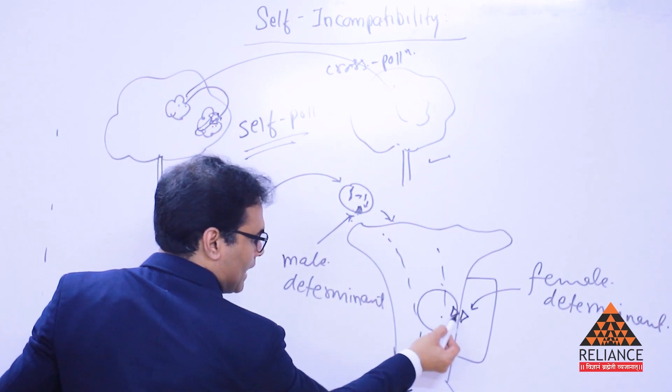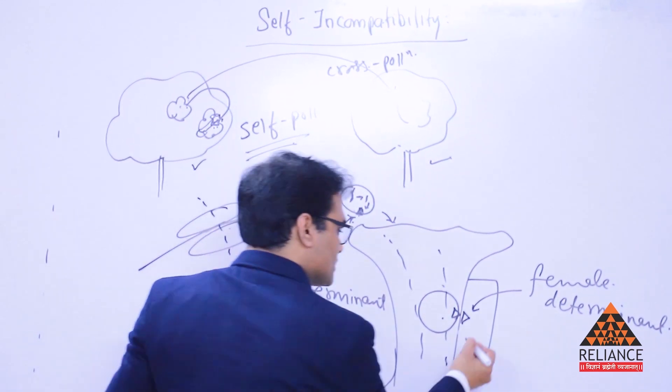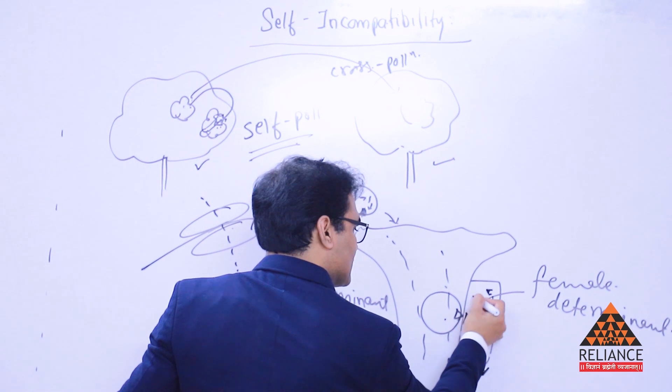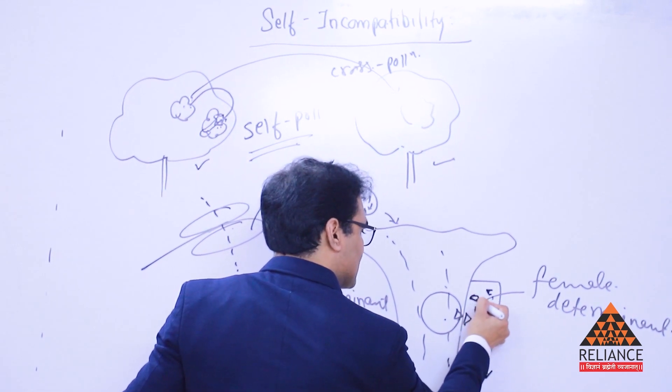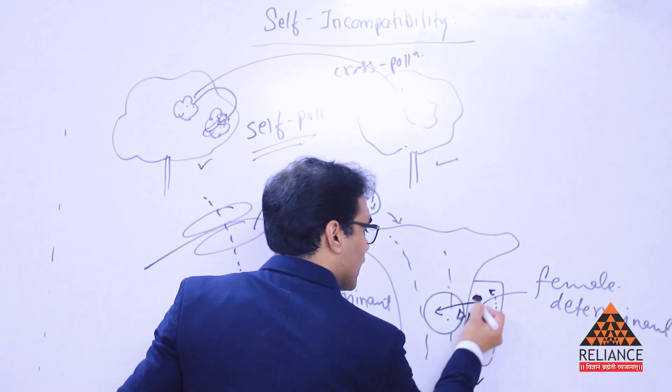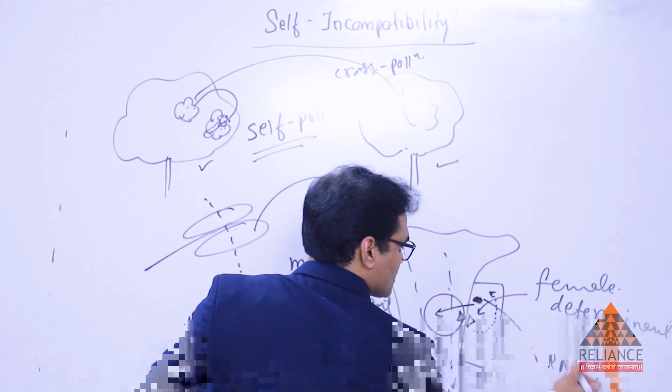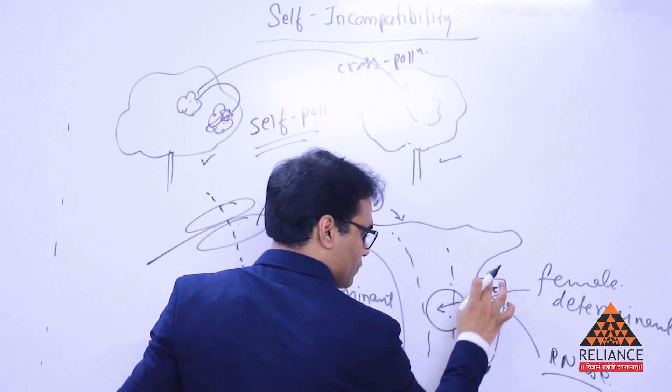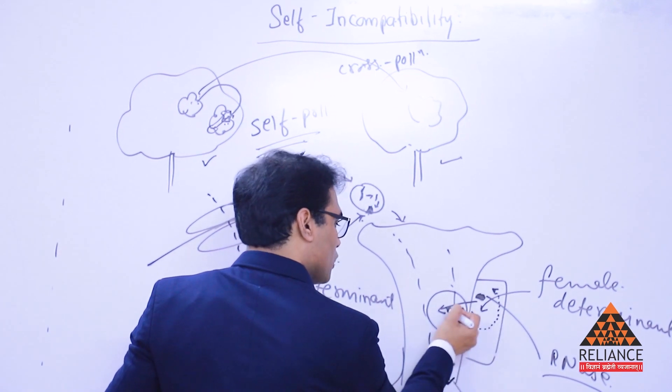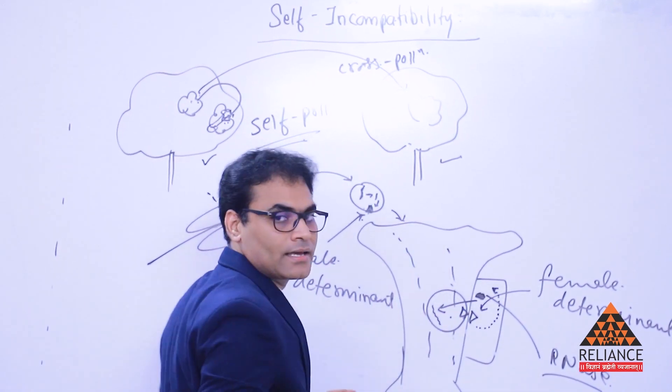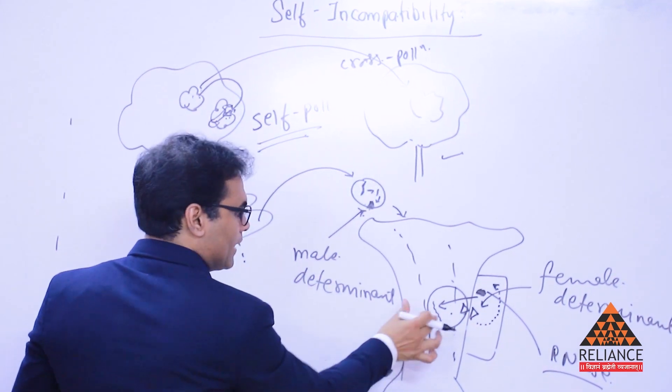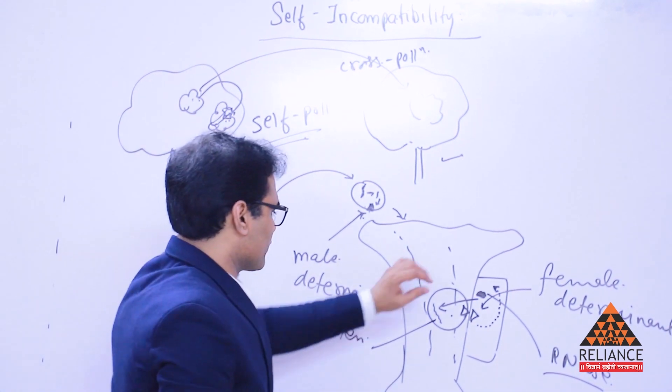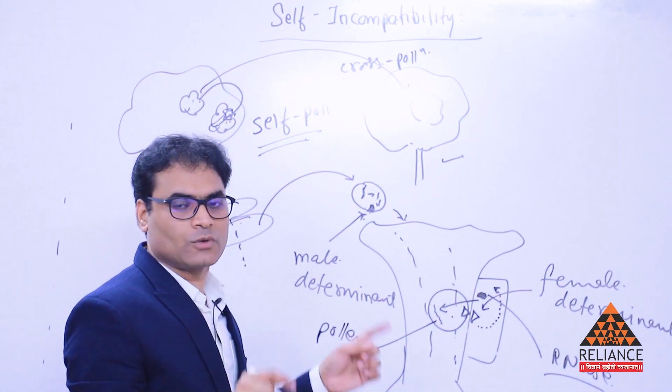Now the male determinant protein, when it comes here and matches with this, this results in activation of this cell and its proteins, ultimately the DNA and all, such that from here a protein comes out. That protein is called RNAse protein. What is RNAse now? Such a protein or enzyme, that enzyme which goes and destroys its RNA. Now this was the RNA. Whose RNA is this? This is the pollen grain's.